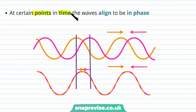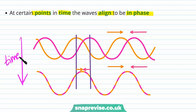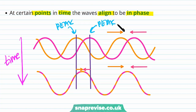At certain points in time the waves align to be in phase. Looking along a time axis, at a certain time the peaks haven't aligned yet, but as the waves continue moving towards each other, after moving a distance delta s they have now aligned — all peaks and troughs are aligned — and we say the waves are in phase.